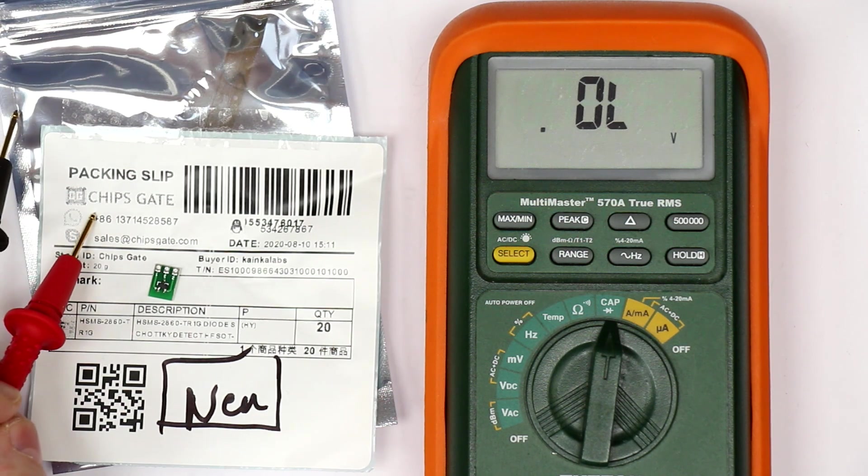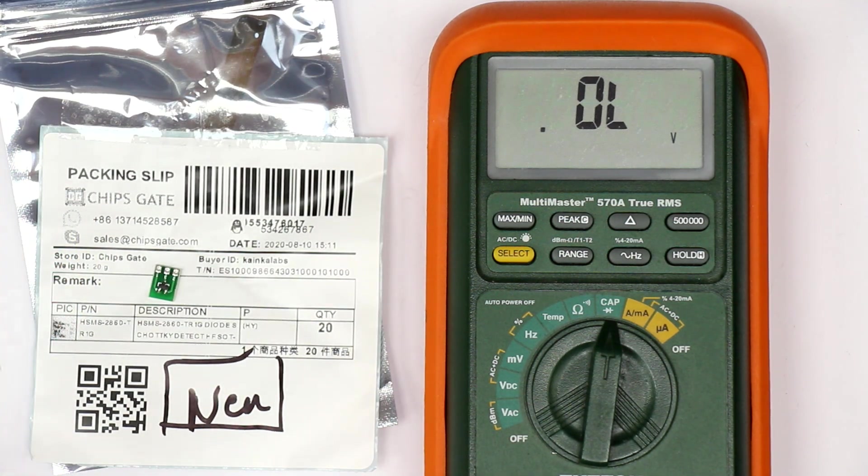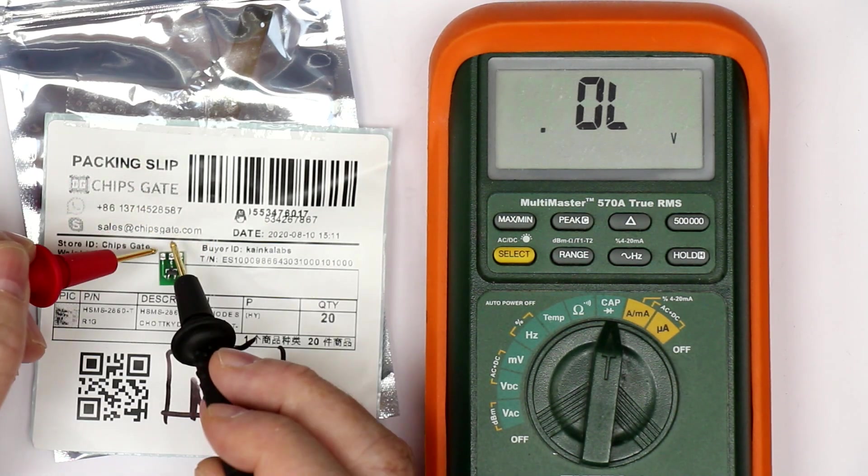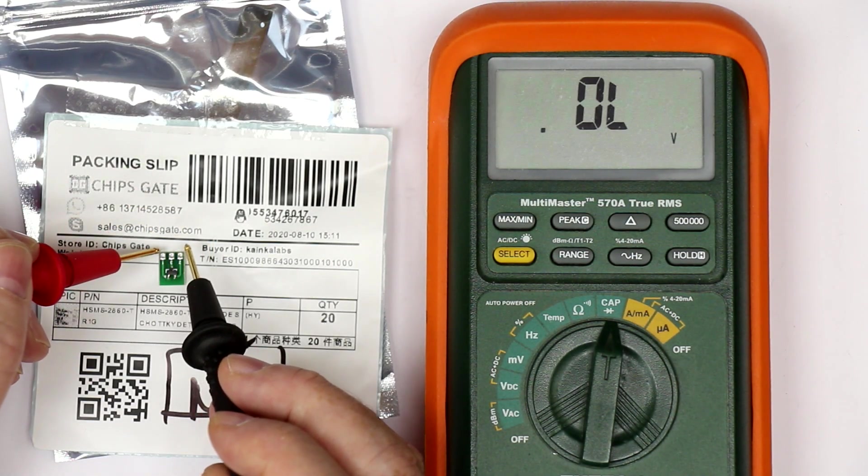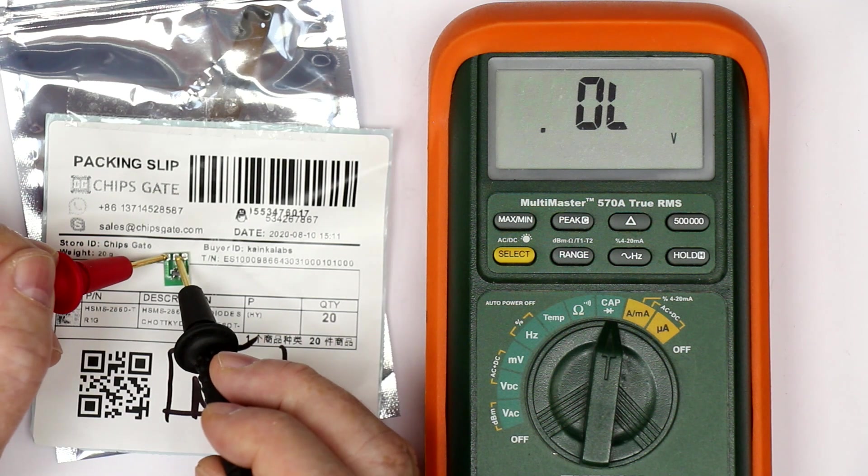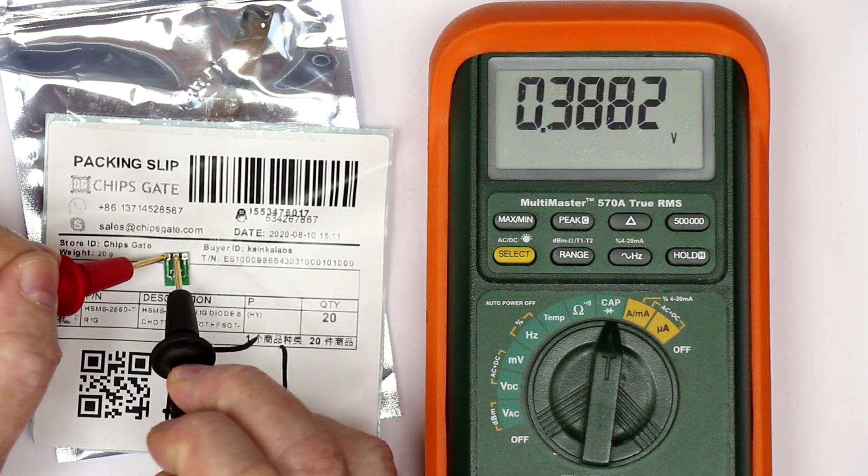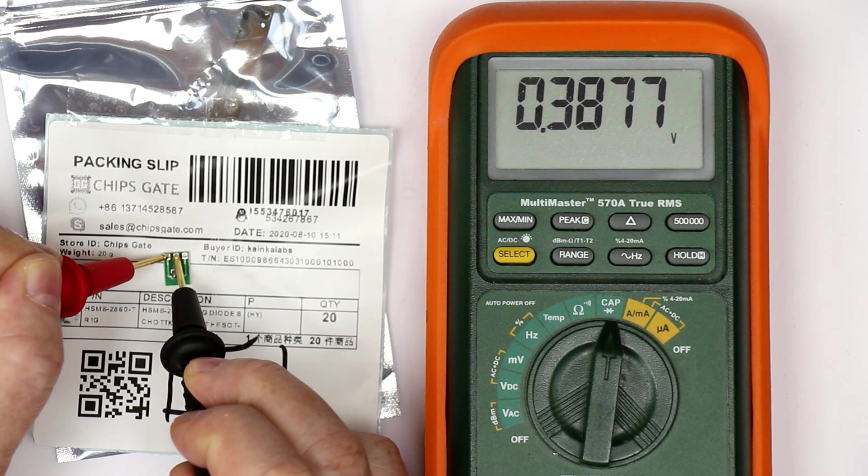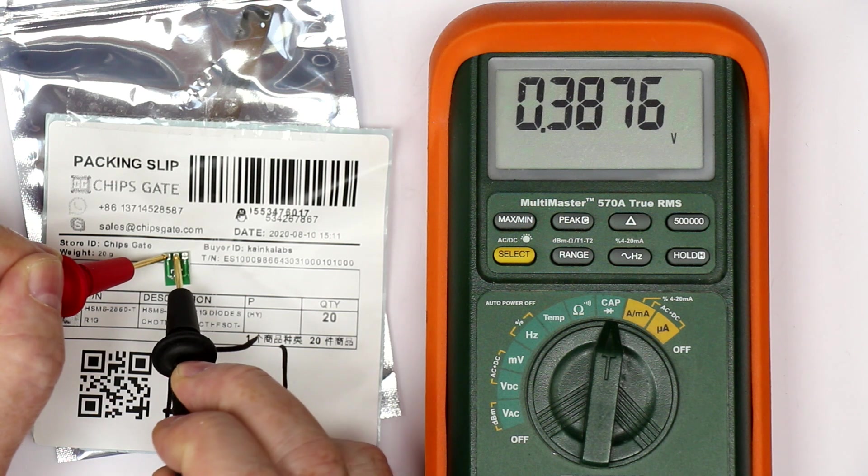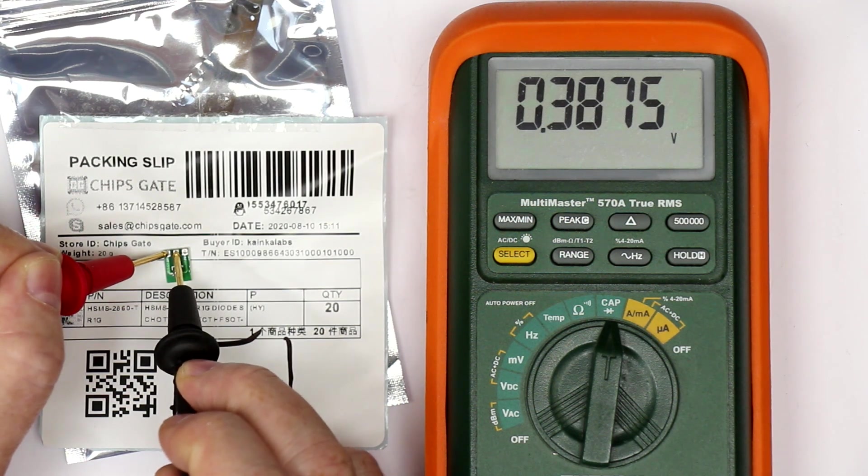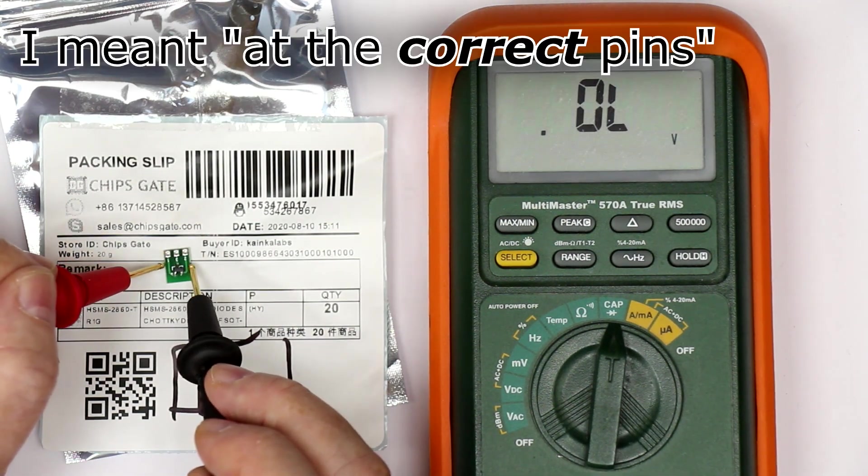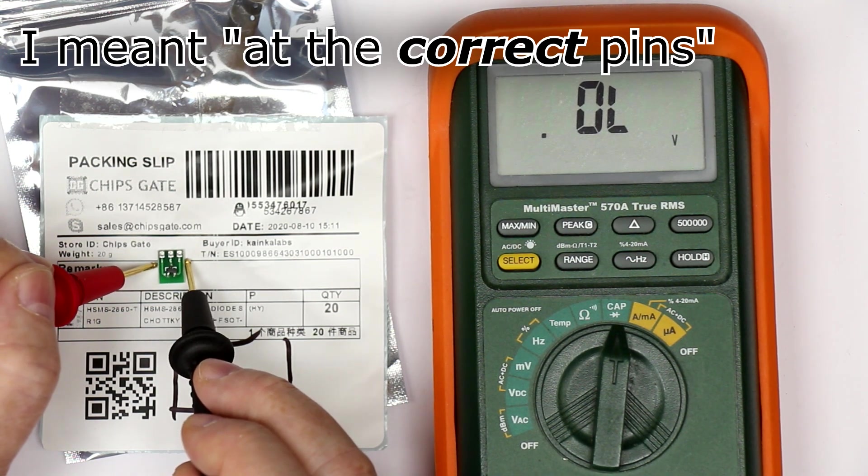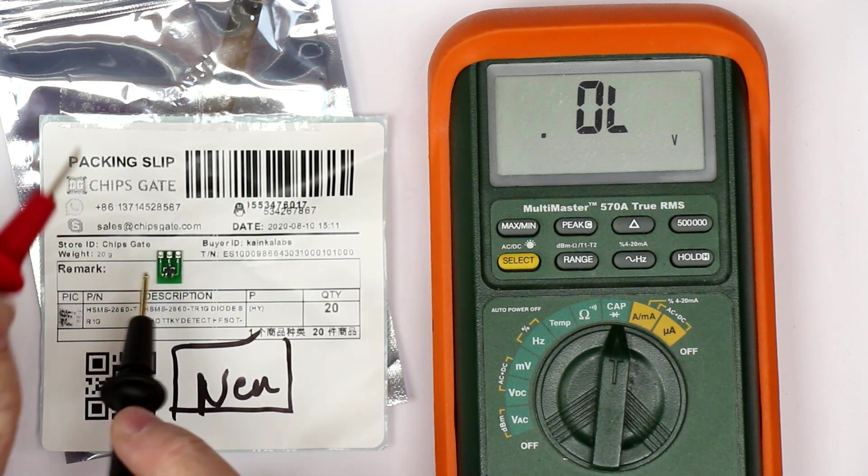Now let's check again. I've soldered one here on this breadboard from pin 1 to pin 3 if we get a diode connection. We have 0.388 volts so this looks better, it's clearly a Schottky diode and it's clearly at the correct pins.